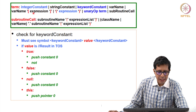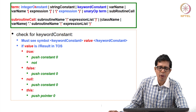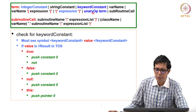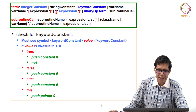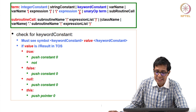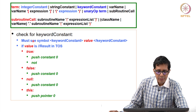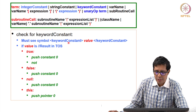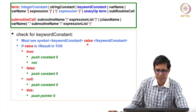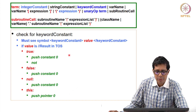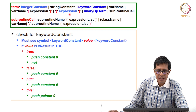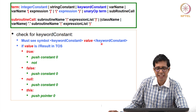When we compile a term, we look for integer constant, unary op, and starting parenthesis. If none of those are found, it will look for a keyword constant followed by some value. If it finds a keyword constant, it takes that particular path.